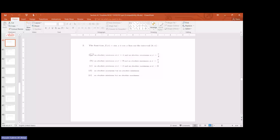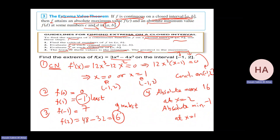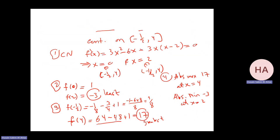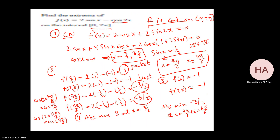Let us continue section 4.1. We finished finding the critical numbers. Now we're talking about finding the absolute maximum and absolute minimum. The guidelines for finding extrema on a closed interval are: find the critical numbers, evaluate f at each critical number, evaluate f at each endpoint. The least will be the minimum and the greatest will be the maximum.